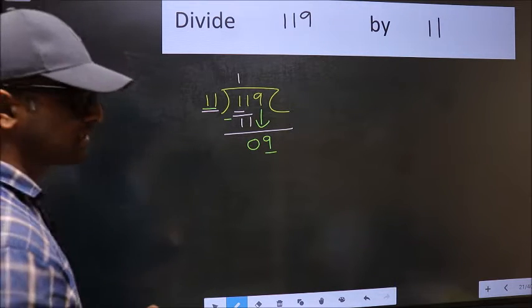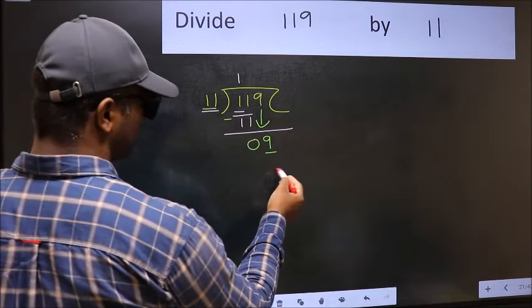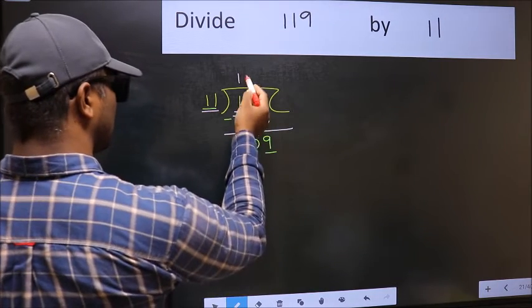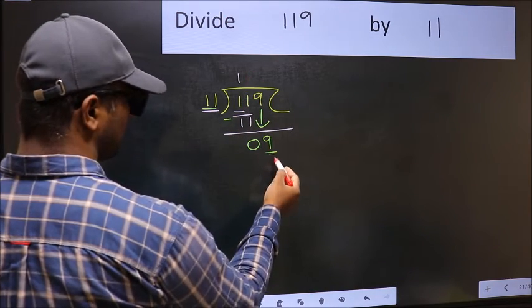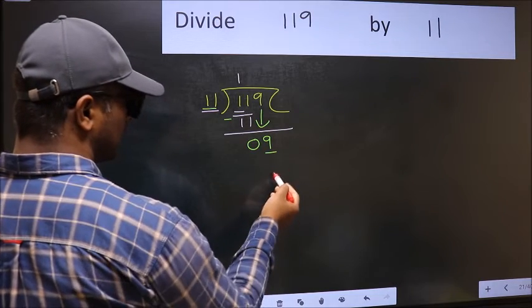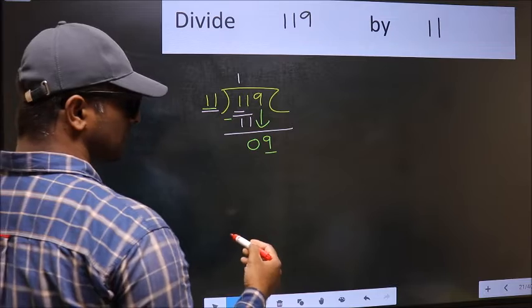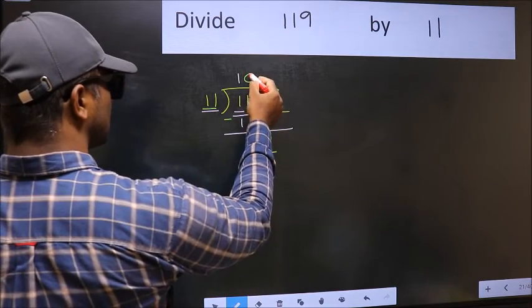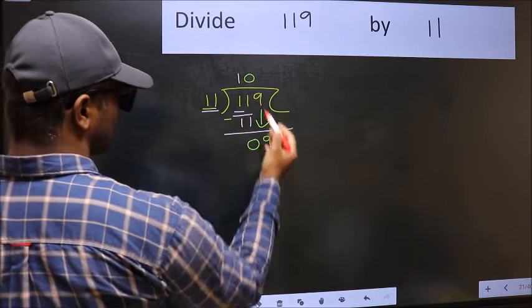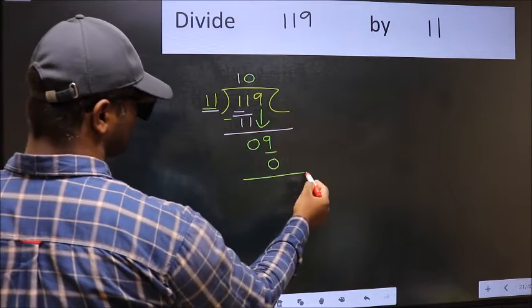what you should think of doing is: which number should we take here? If I take 1, we will get 11. But 11 is larger than 9, so what we should do is take 0. So 11 into 0 is 0.